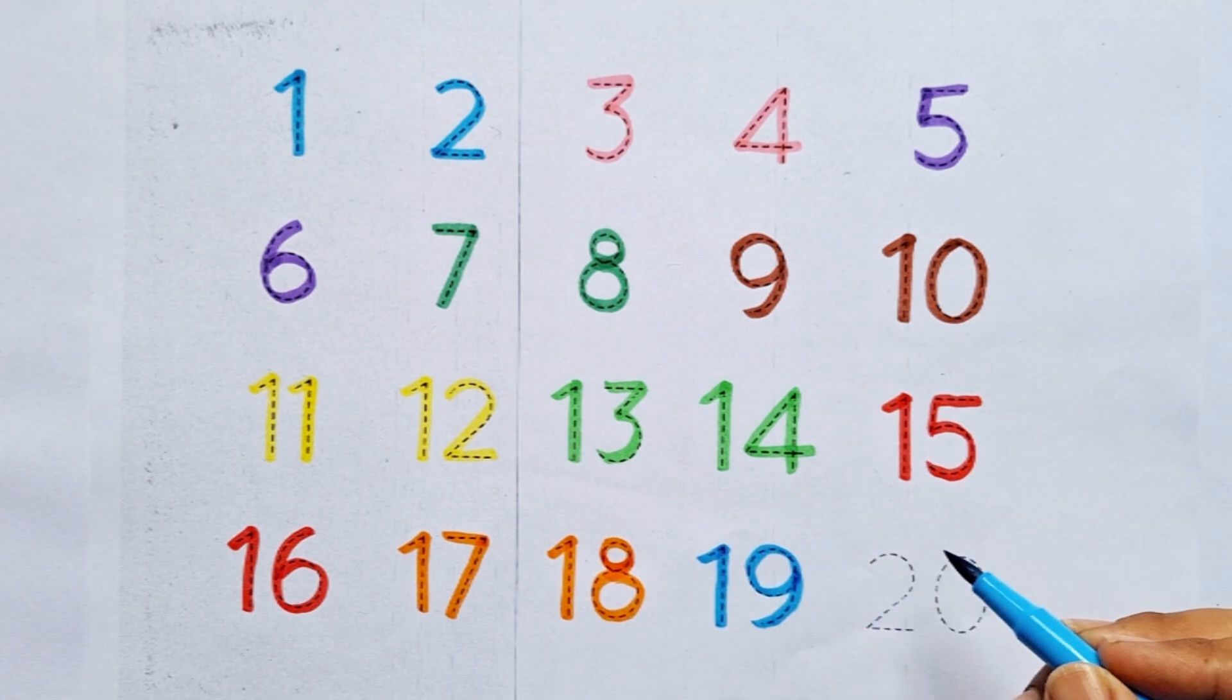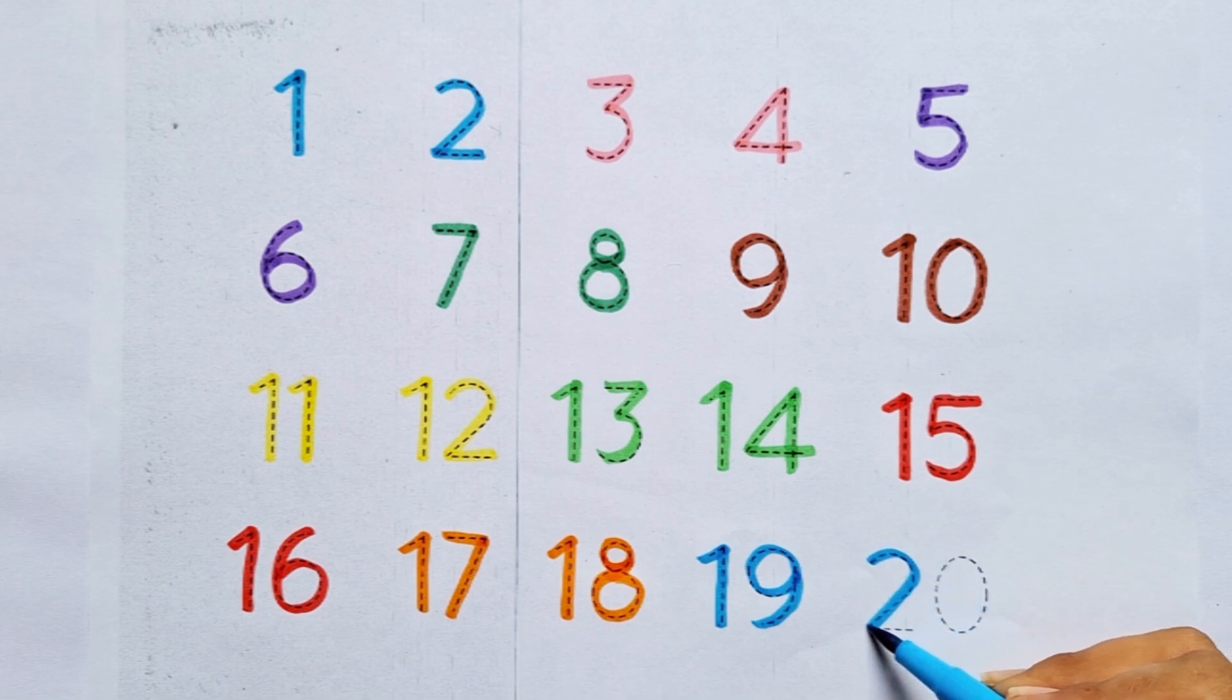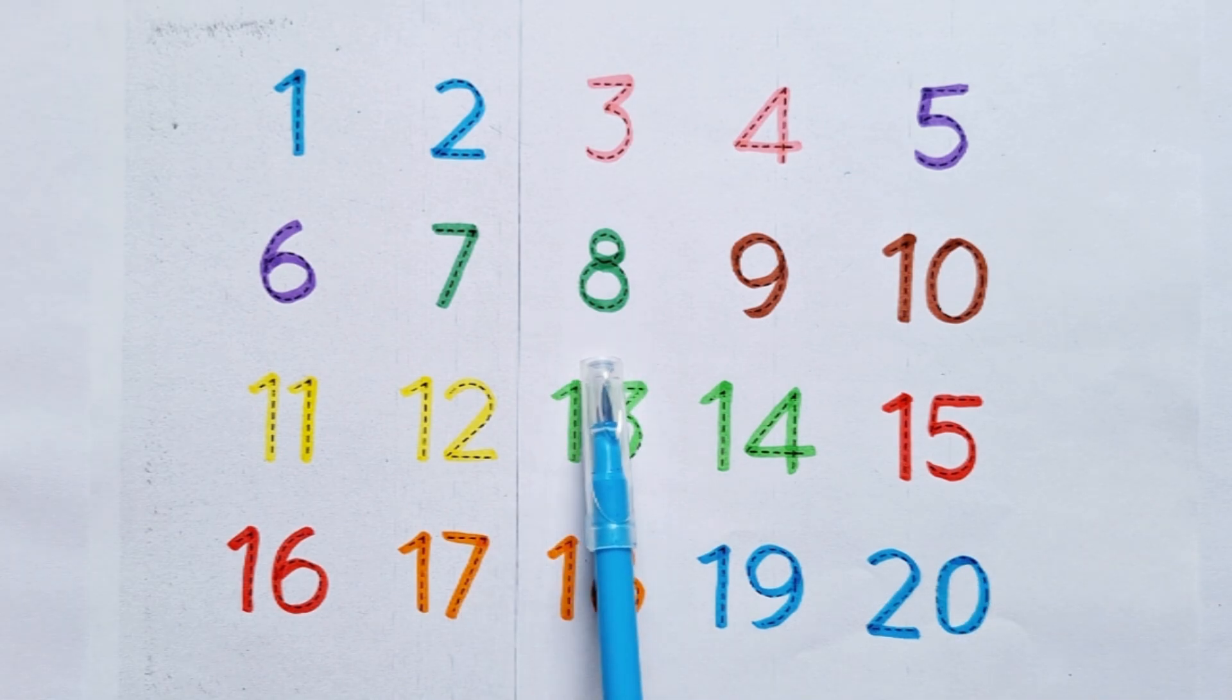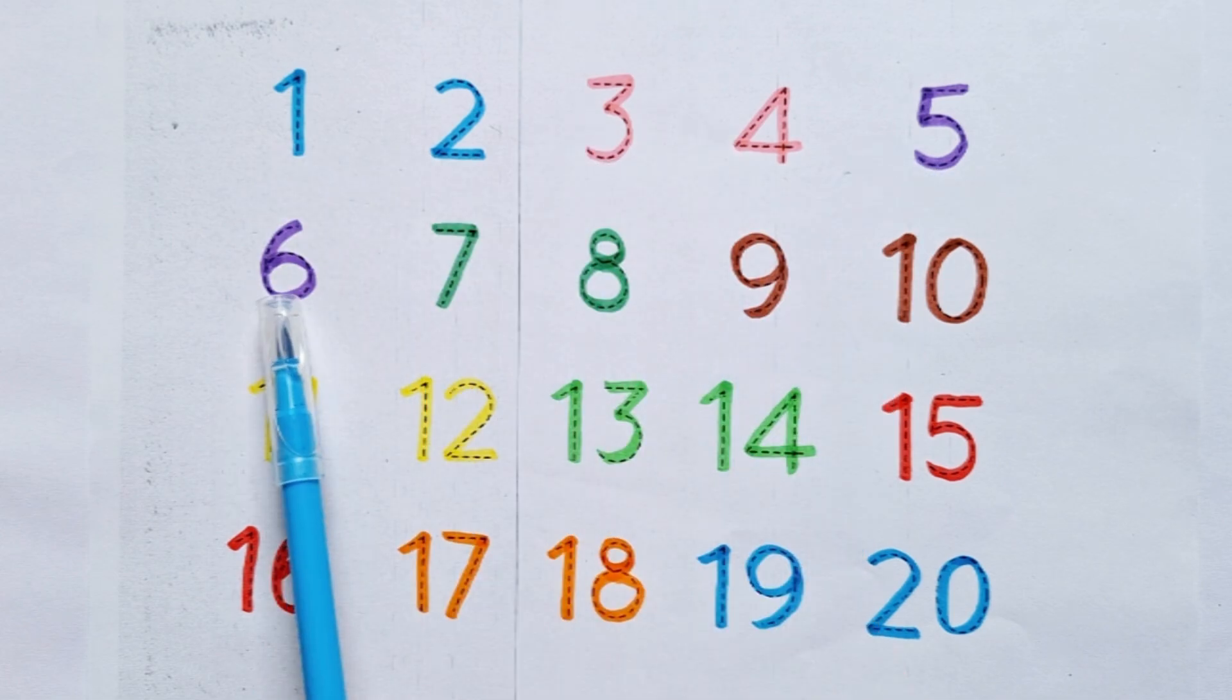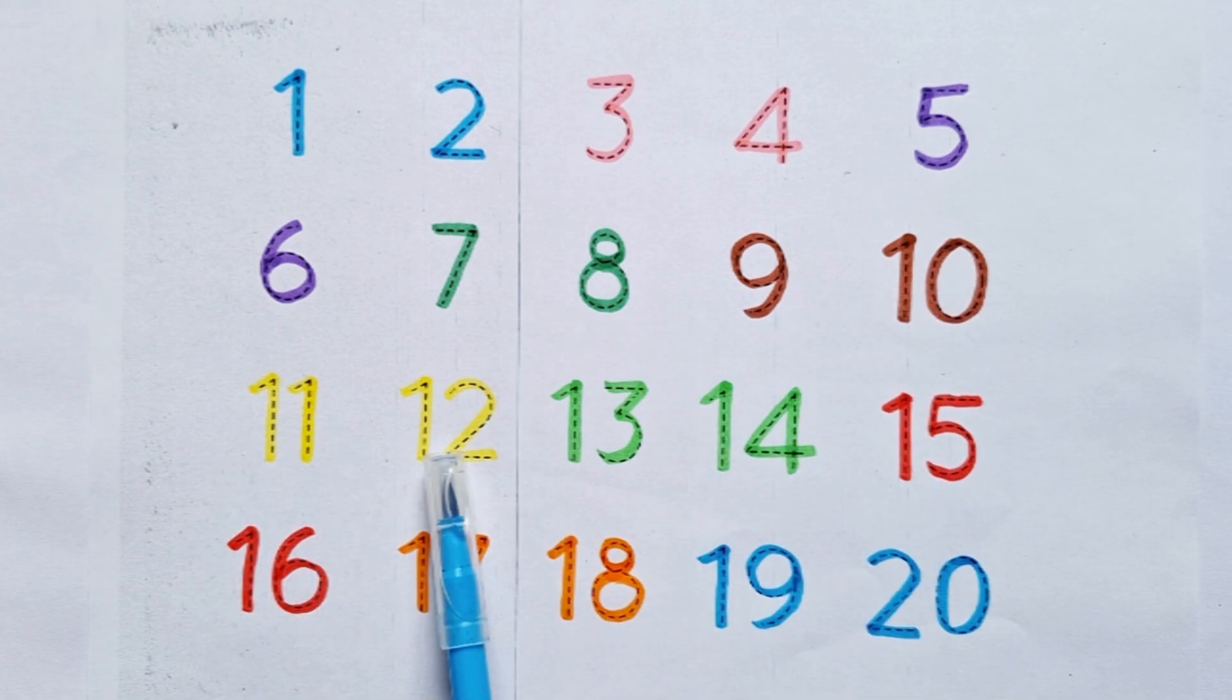comes nineteen. Twenty: two, zero. Twenty. After nineteen comes twenty. Let's again learn counting from 1 to 20: 1, 2, 3, 4, 5, 6, 7, 8, 9, 10, 11, 12, 13, 14, 15, 16, 17, 18, 19, 20.